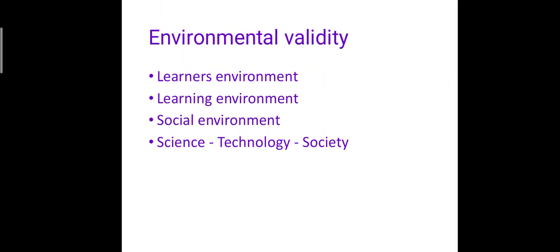Environmental validity is another type. When we hear about science, we first think about the physical environment, which is of great concern. But the first priority is the learner's environment — the background and characteristics of the environment in which the learner exists, and the kind of experience and exposure the learner has. The second dimension is the learning environment — the context of learning, whether a learner is subjected only to within-classroom theoretical concepts.